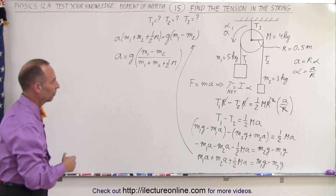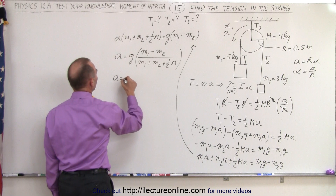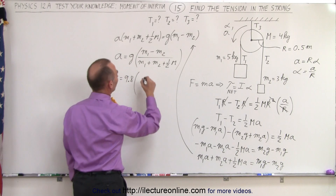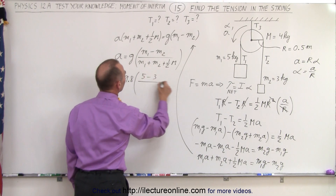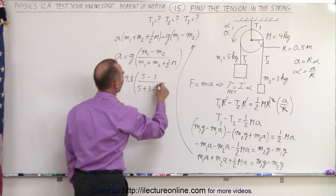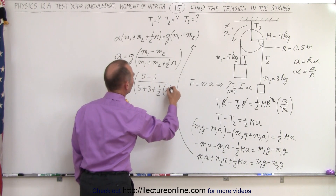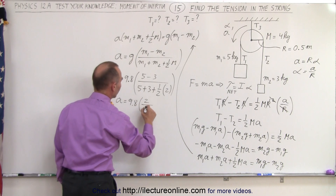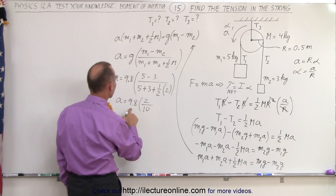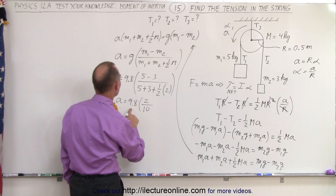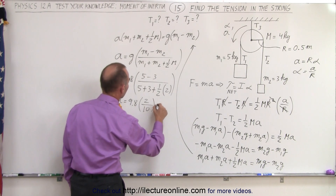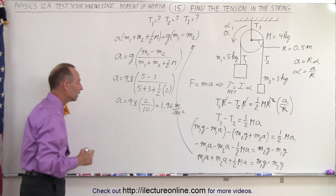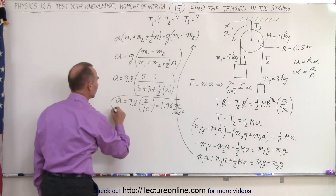So a equals g times (m1 - m2) divided by (m1 + m2 + ½M). Plugging in numbers: a = 9.8 × (5 - 3) divided by (5 + 3 + ½×4), which is 9.8 × 2 divided by (8 + 2), which is 10. That's 2 tenths of 9.8, which is 1.96 meters per second squared.